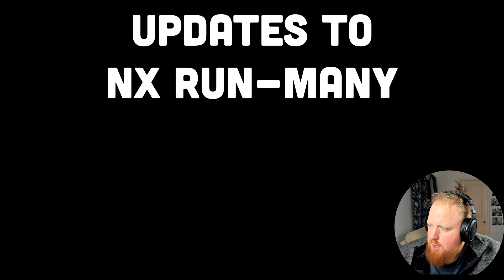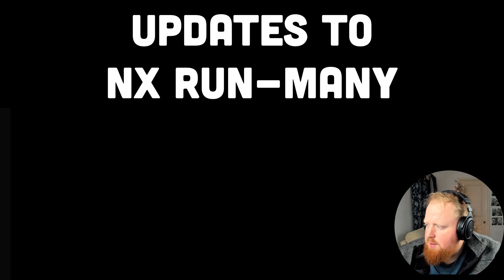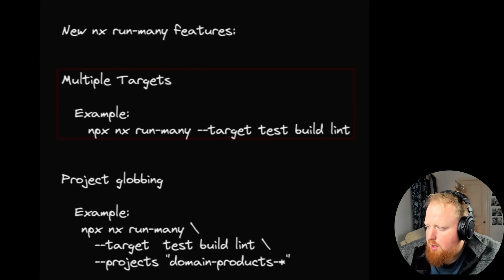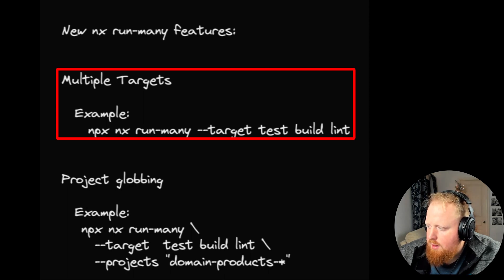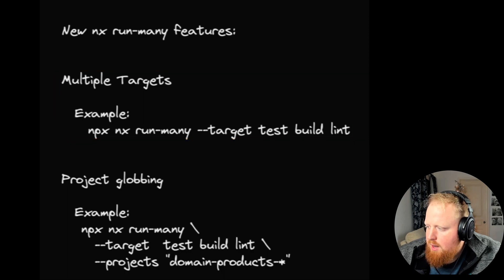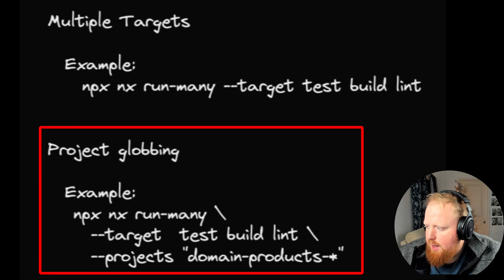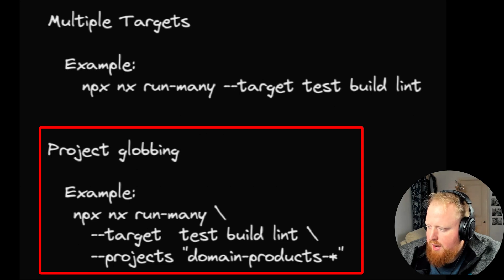NX 15.4 includes updates to the NX run many command, allowing you to add multiple whitespace-separated targets as well as globs in the projects option. For example, the command npx nx run-many --target test build lint would run all test, build, and lint targets in your workspace. And now you can also filter this down to select projects via globbing — for example: npx nx run-many --target test build lint --projects domain-projects-*. This will now run all test, build, and lint targets for all projects in your workspace that start with domain-products.